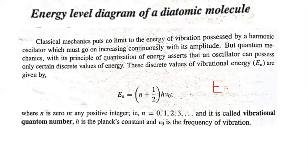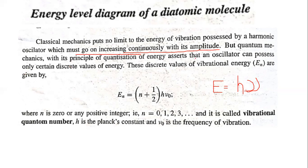The energy is equal to h times ν. Classical mechanics could not limit the energy of vibration, which must go on increasing with amplitude. But quantum mechanics — the principle of quantization of energy — asserts that an oscillator can possess only certain discrete energy values.